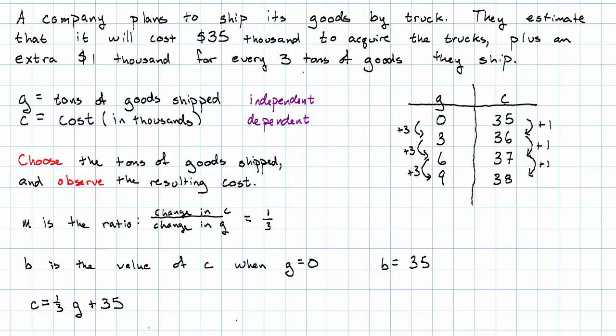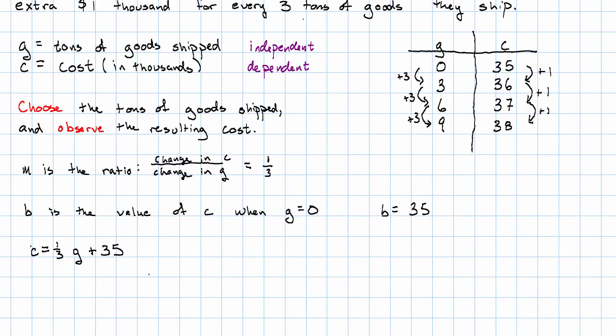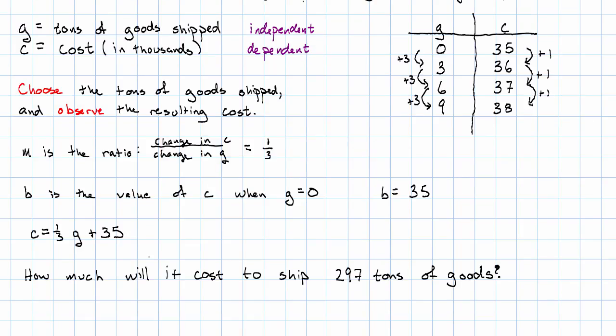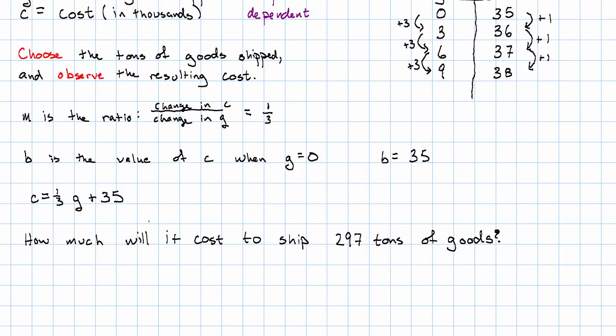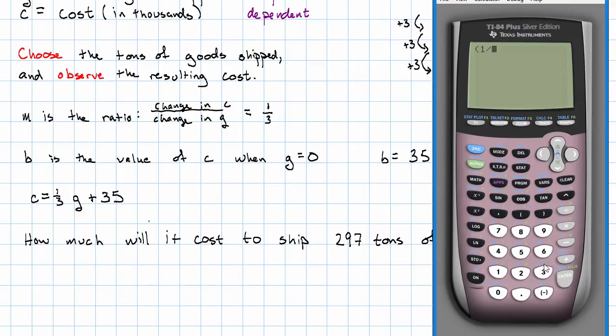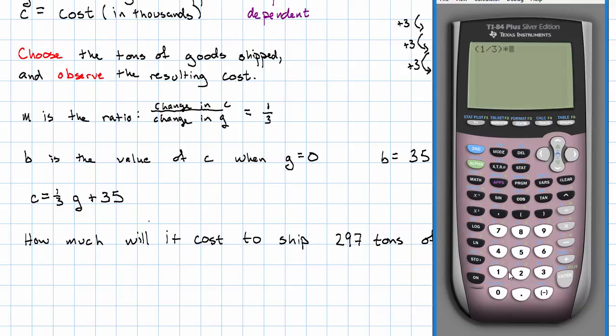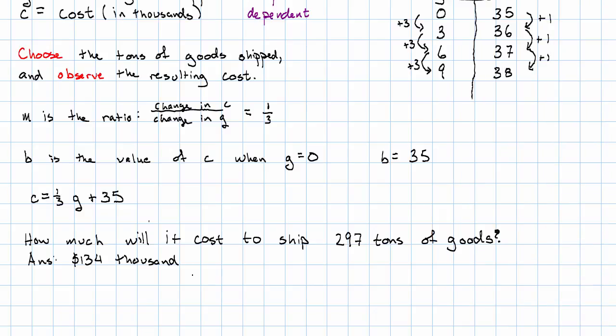What's the advantage of having the equation? Well, now I can ask the question, how much will it cost to ship 297 tons of goods? And the answer is 1 third times 297 plus 35. And we see it'll cost $134,000. We would not have wanted to figure that out by extending this table all the way down to $134,000.